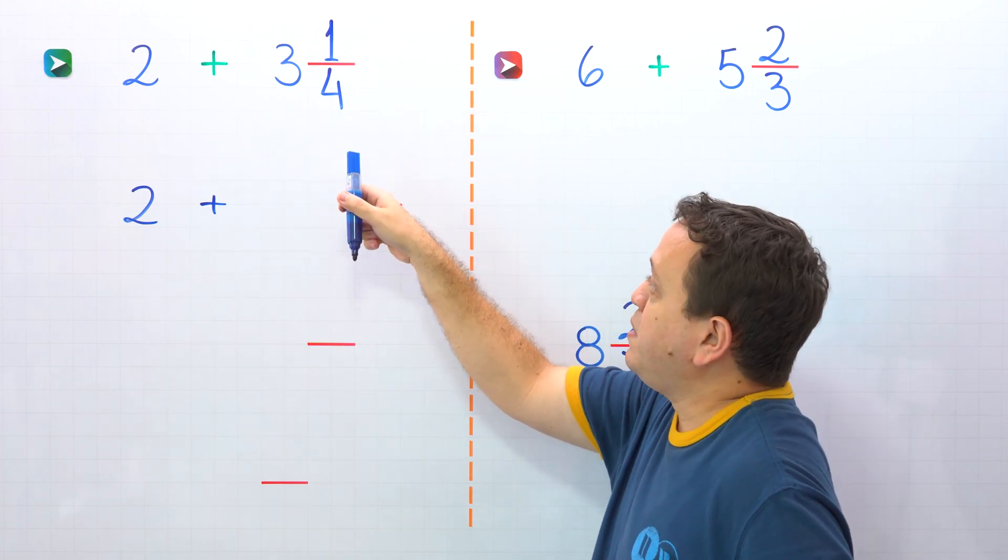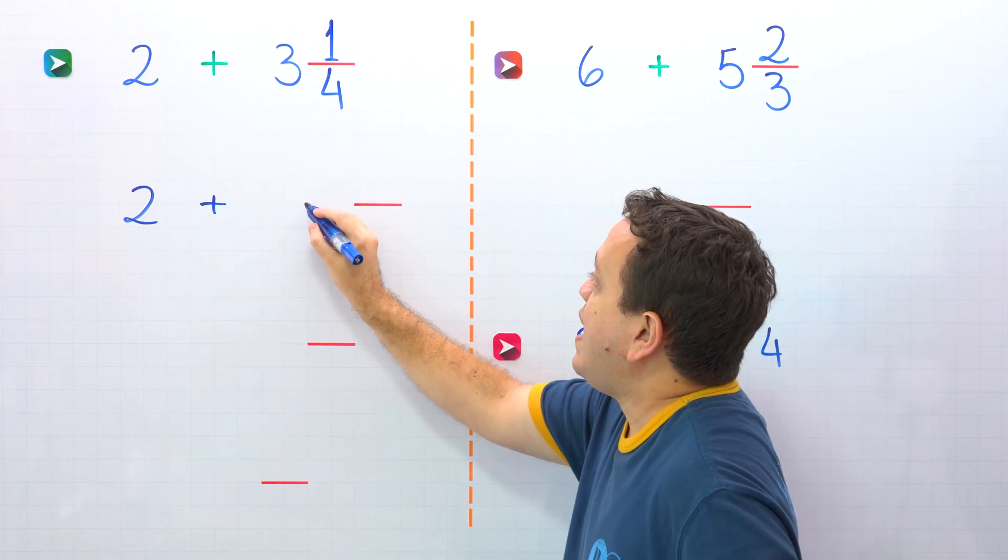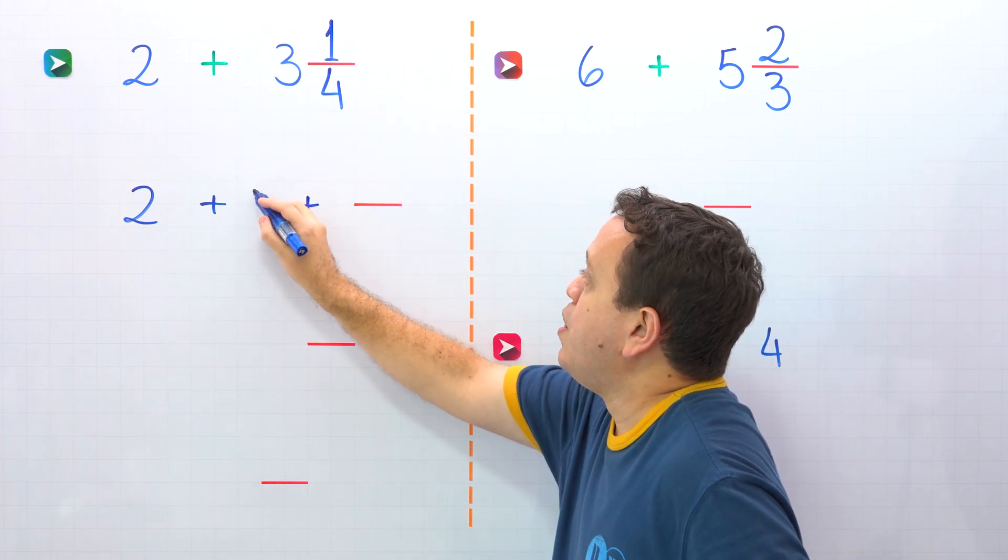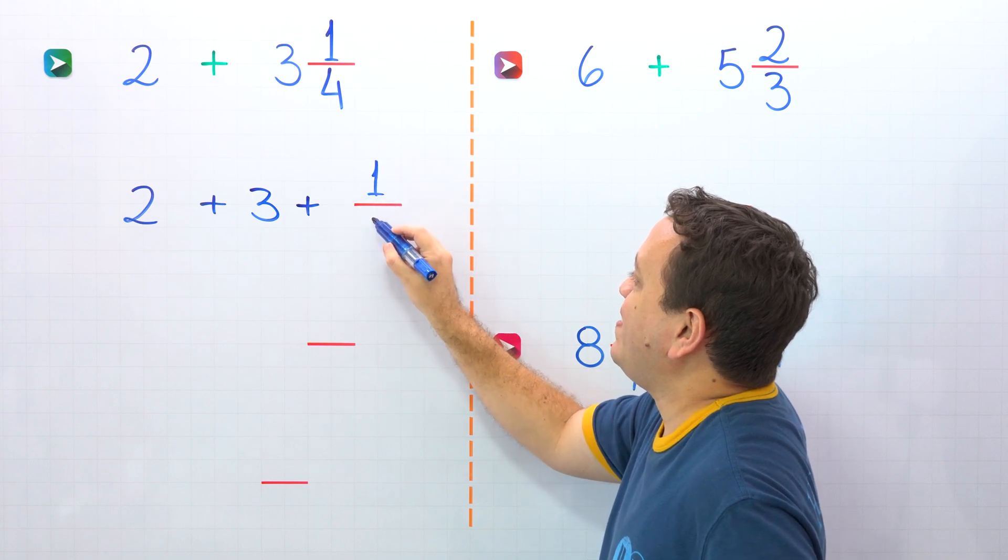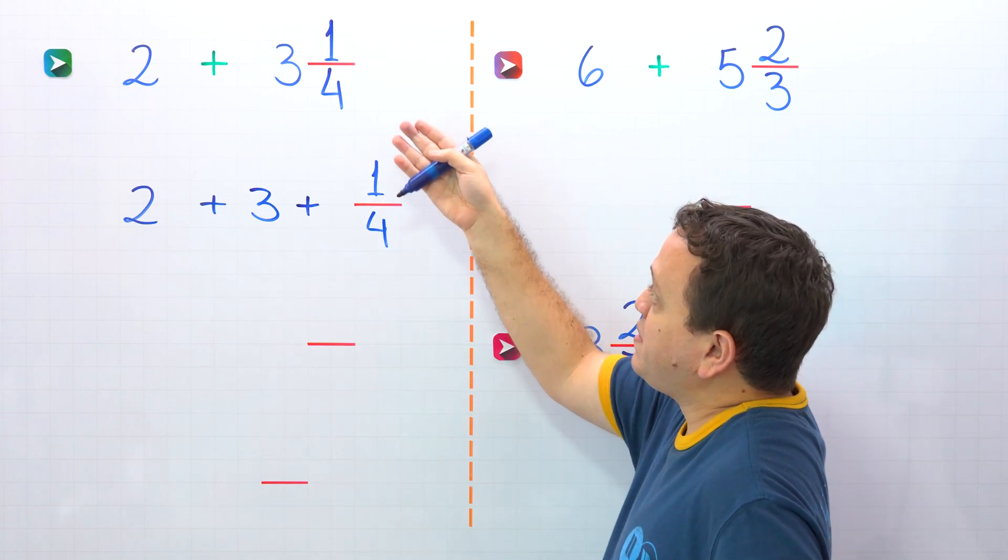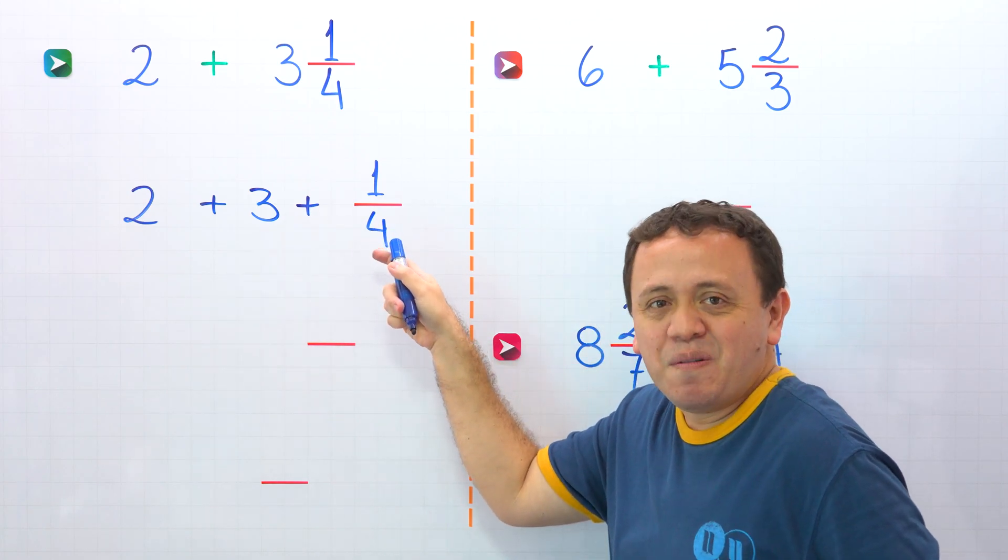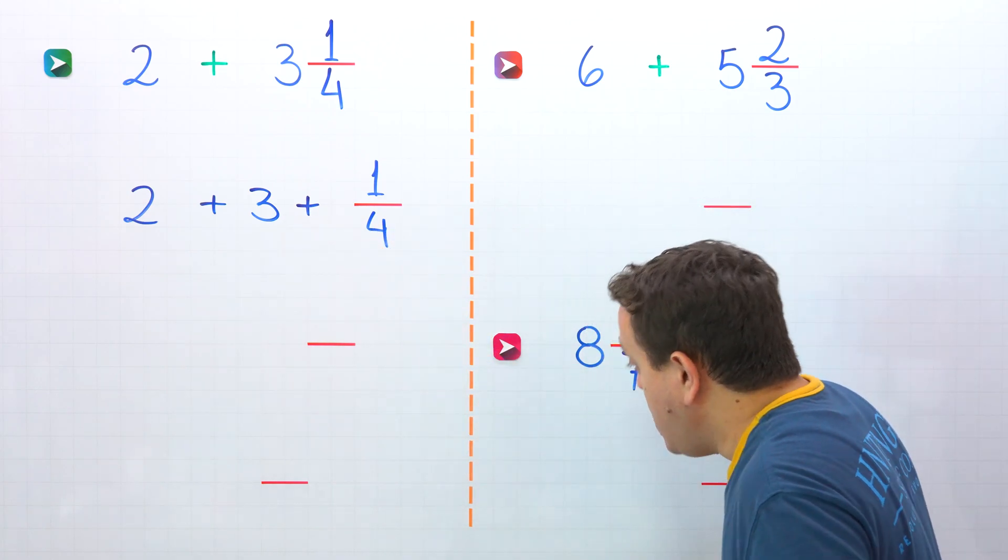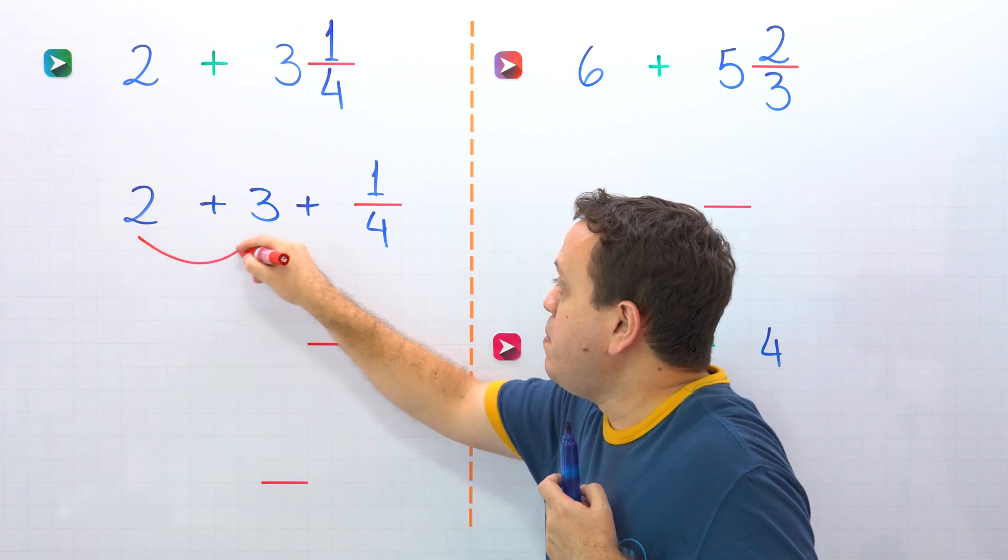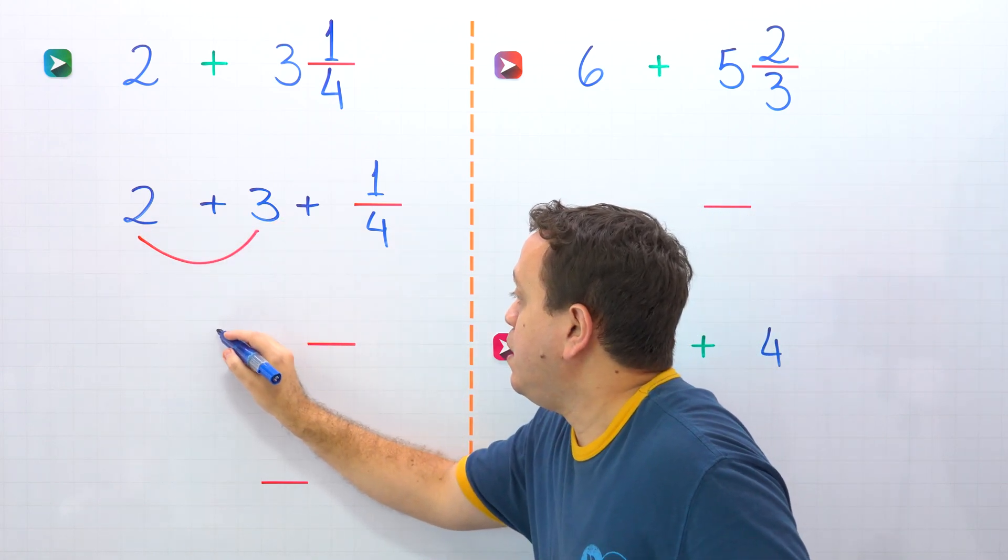So, we can rewrite the mixed number 3 and 1 fourth as the sum of a whole number 3 and a proper fraction, 1 fourth. That's it! We rewrite the mixed number 3 and 1 fourth as the sum of a whole number and a proper fraction. Then, we continue by adding the whole numbers, and 2 plus 3 give us 5.